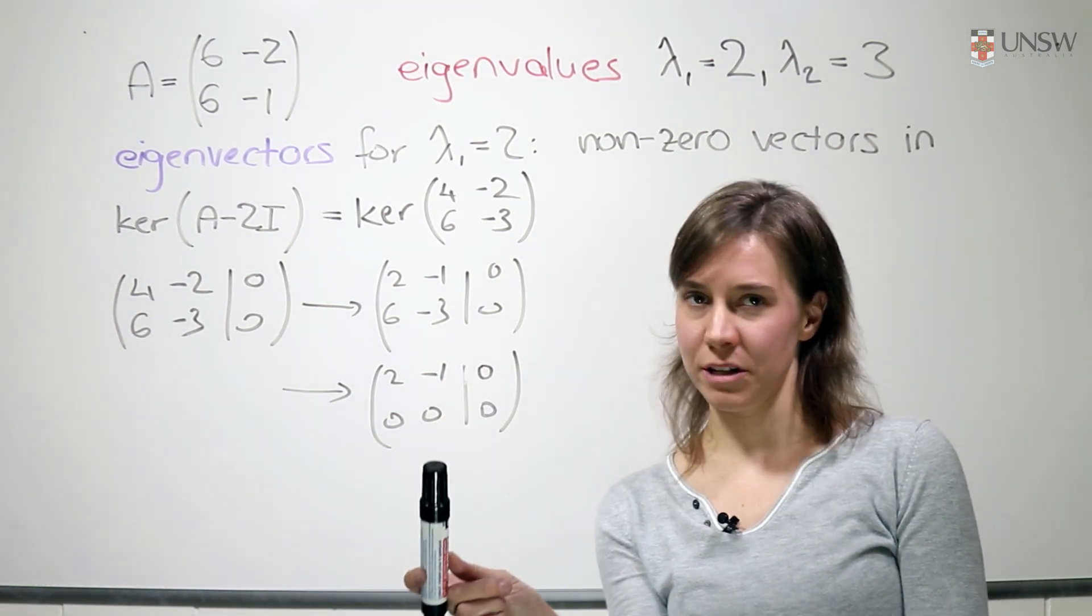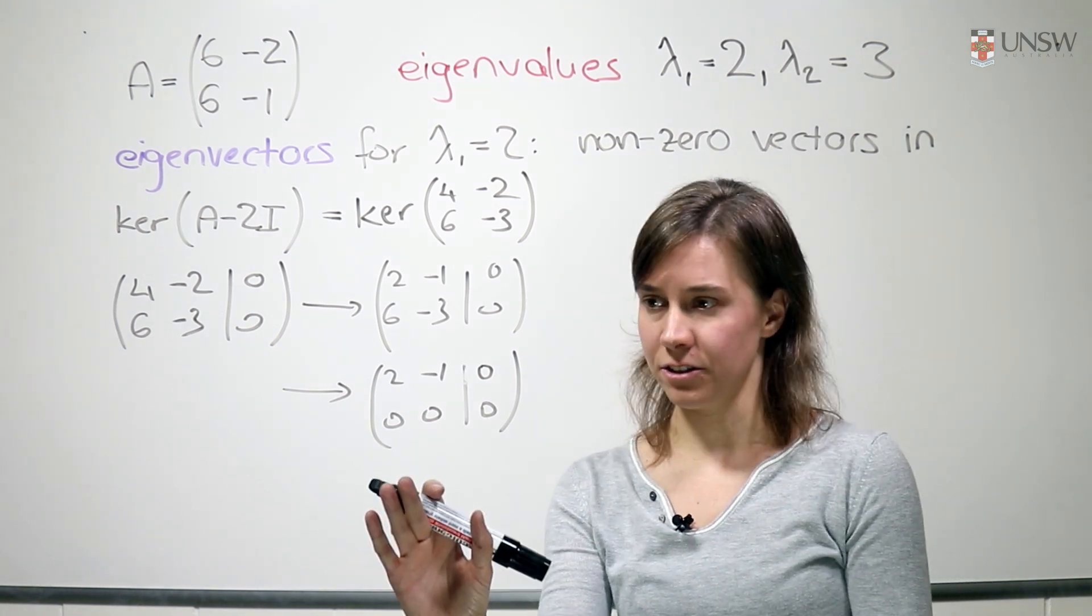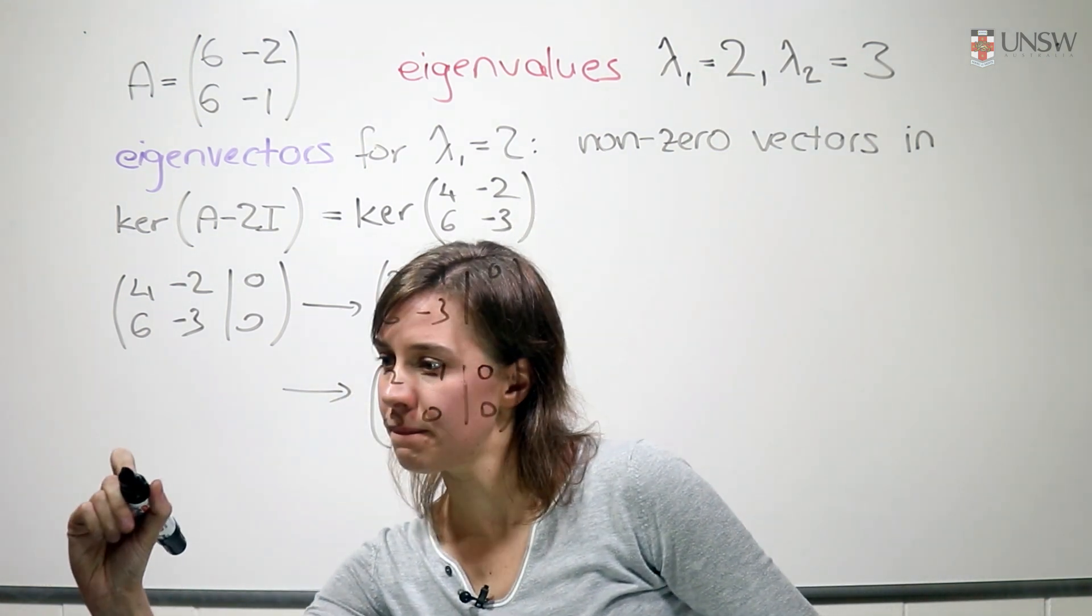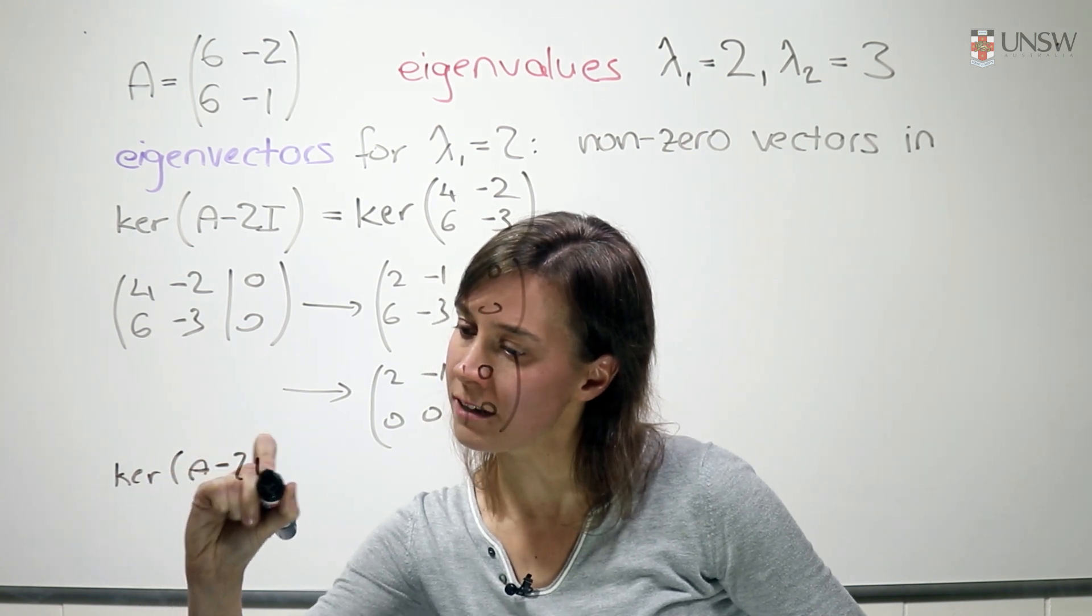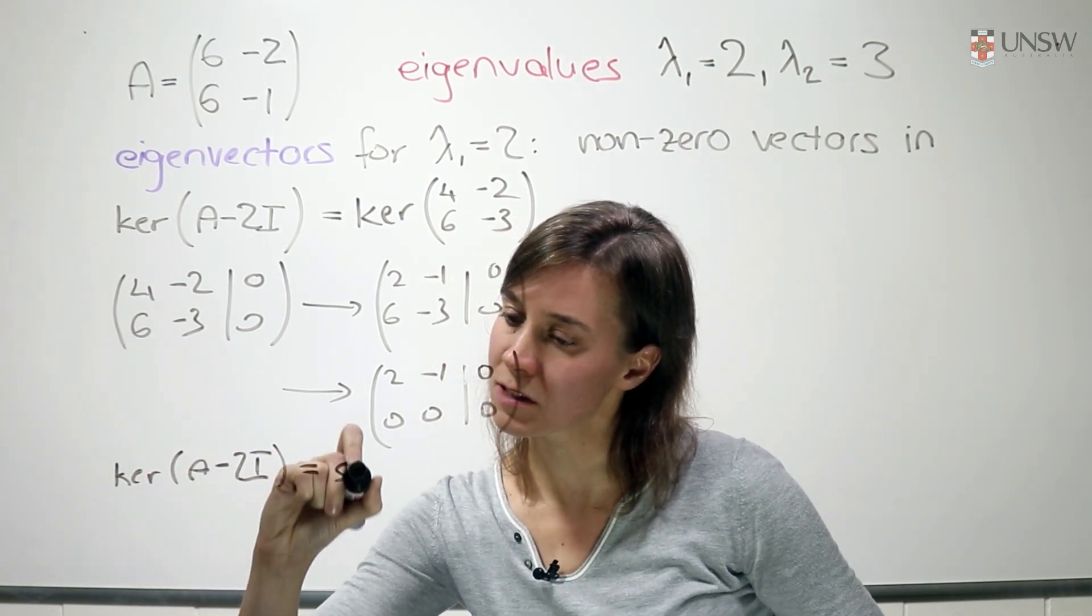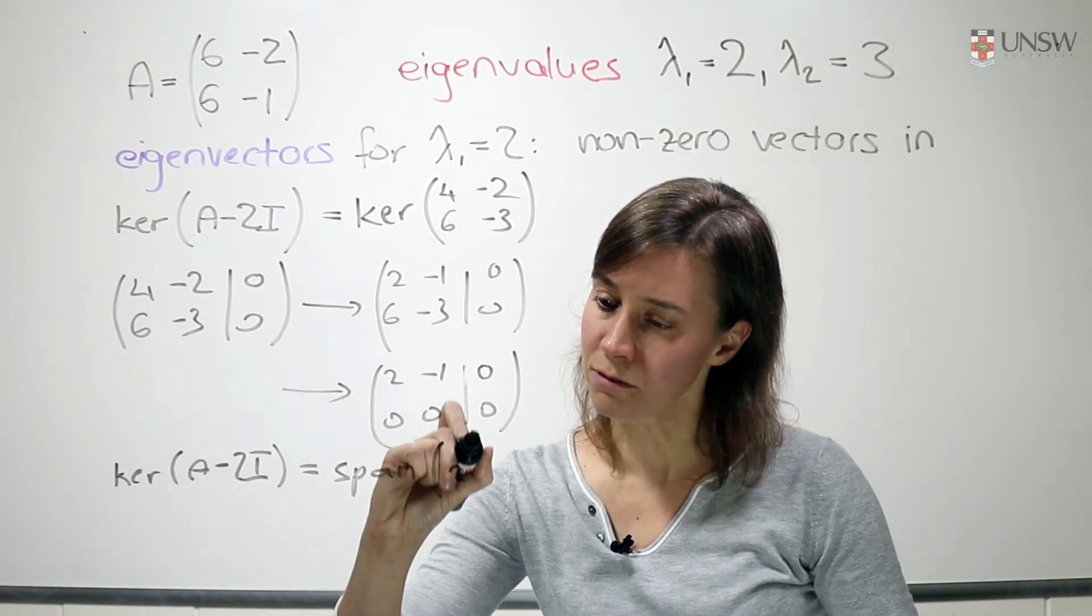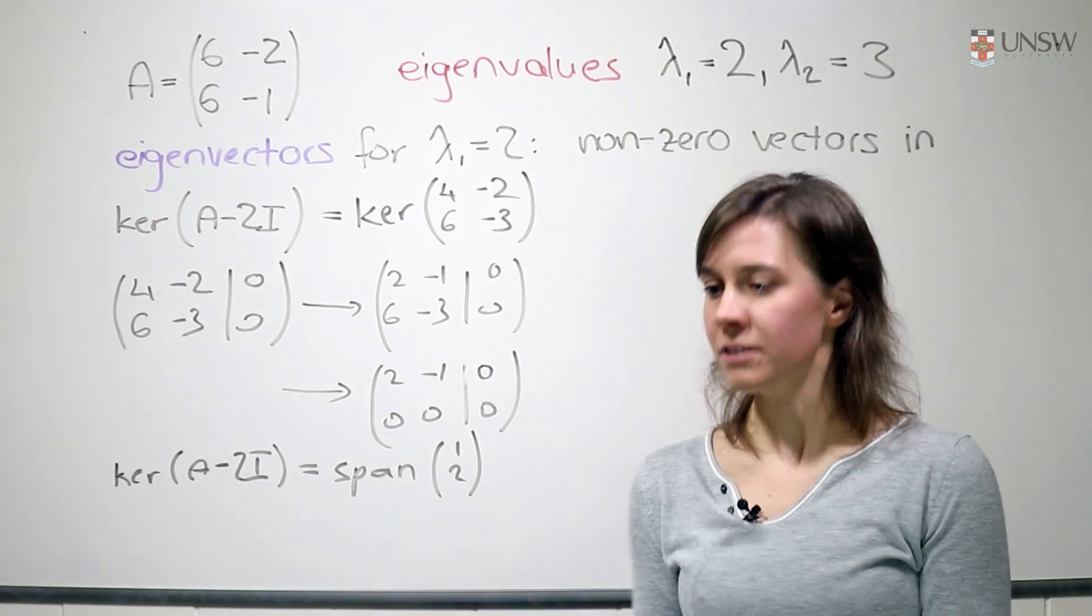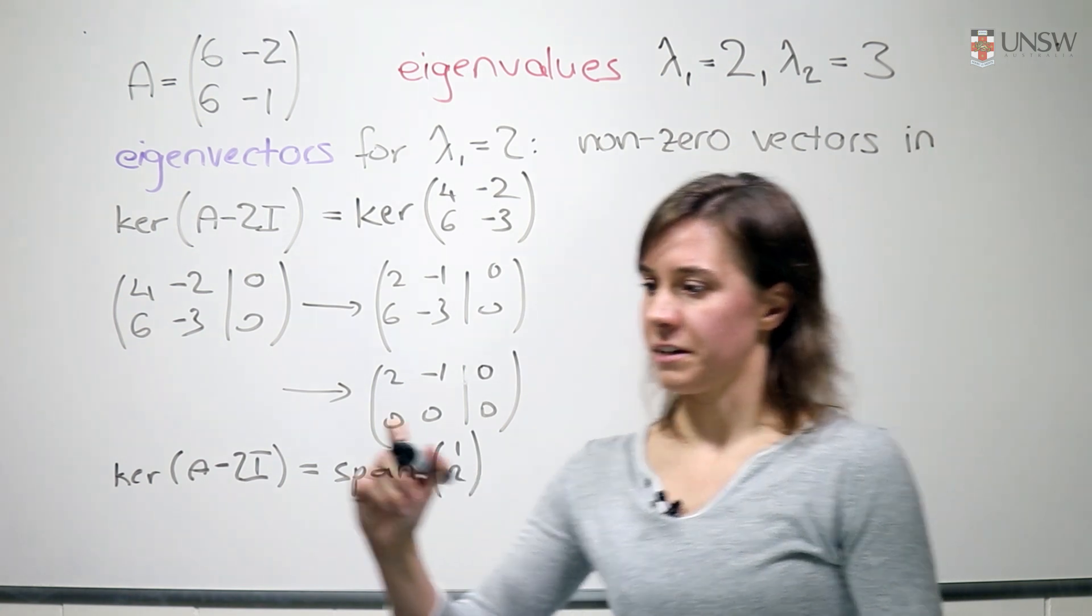So by looking at this matrix, we can easily see one vector that's in the kernel, for example, 1 and 2. So the kernel of A minus 2I is the span of the vector 1, 2. And now we know that the eigenvectors corresponding to the eigenvalue lambda 1 are all the non-zero multiples of this vector.